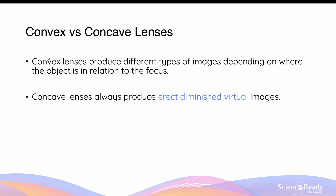So to summarize, in convex lenses, we have different types of image produced, depending on where the object is in relation to the focus. Concave lenses are much simpler. They always produce erect or upright, diminished, and virtual images. This concludes the video on lenses.